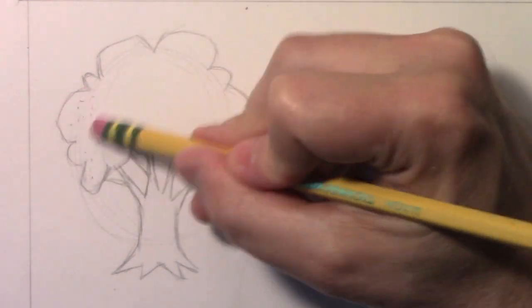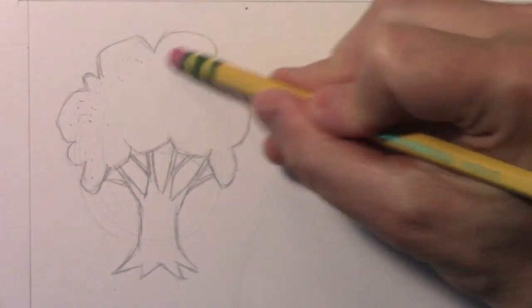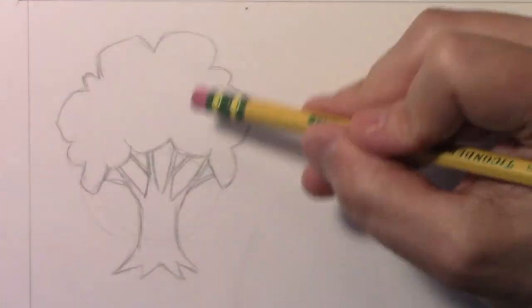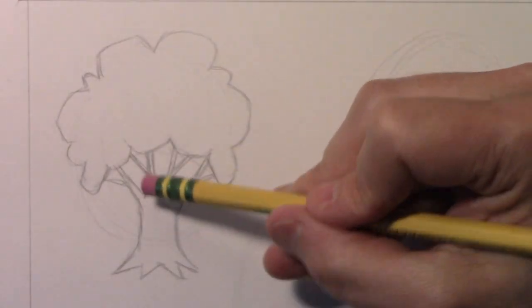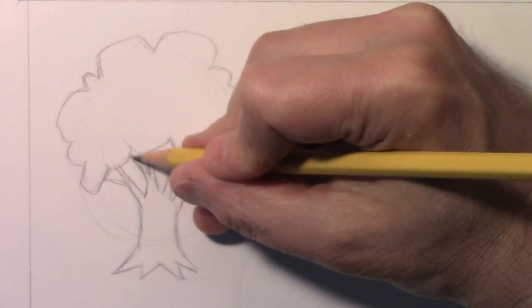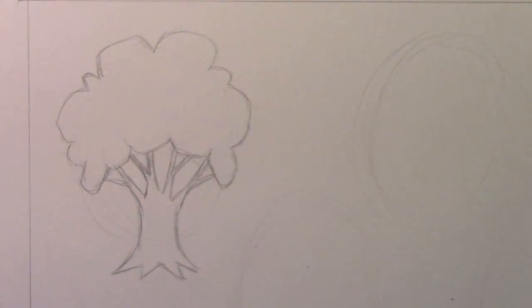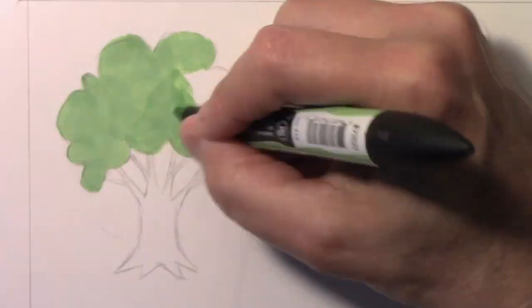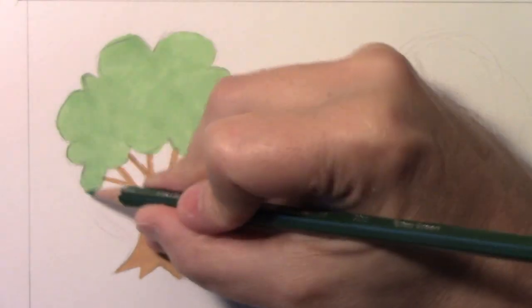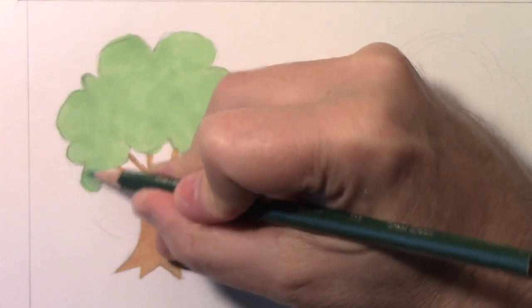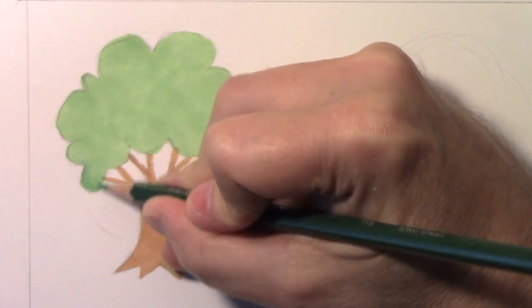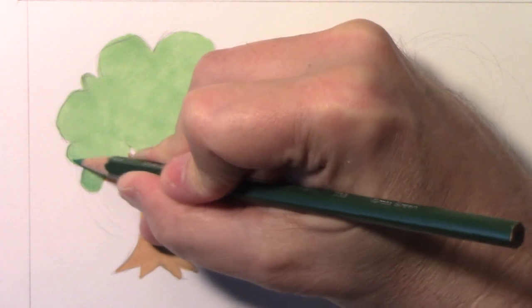Now what I'm going to do real quickly, just to give you a sense of how this becomes a finished illustration, is I'm going to take markers and color in the basics of the leaf area and the trunk area. Then I'll come back and talk a little bit as I add further detail by way of colored pencil.